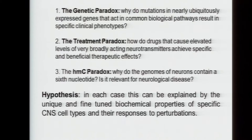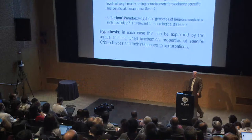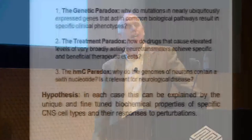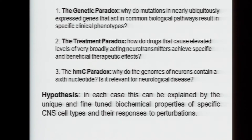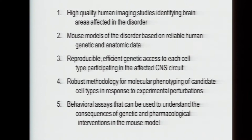The first one I call the genetic paradox: why do broadly expressed genes result in specific phenotypes? This is true essentially for almost every disease gene that affects the nervous system in humans, and we don't know why that's true. Second, there are good drugs — not perfect, actually quite flawed — but they result in elevating neurotransmitters throughout the nervous system, and yet they have very specific and beneficial clinical profiles. How can something that is stimulating a class of 15 receptors all over the brain result in such a specific event? And the third is a closing statement about hydroxymethylcytosine, which we discovered a few years ago — it's enriched in neuronal genomes, and we don't know why there's a new nucleotide present in neuronal genomes.